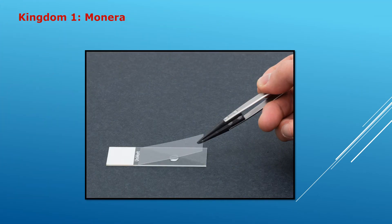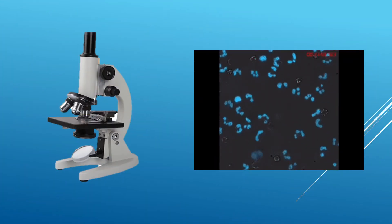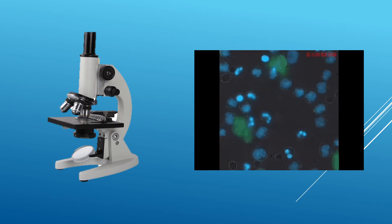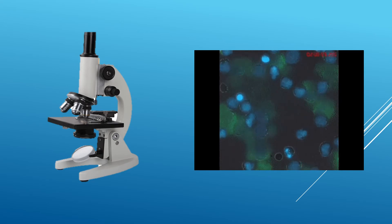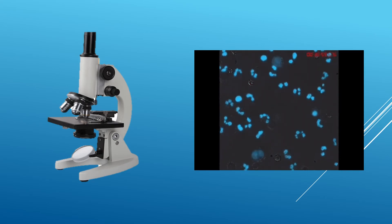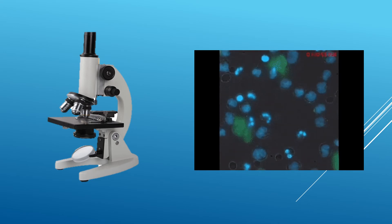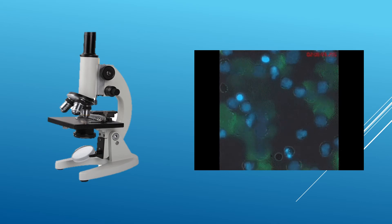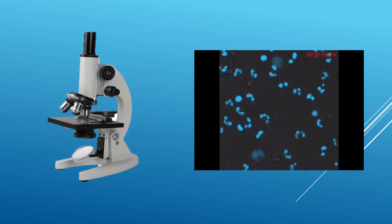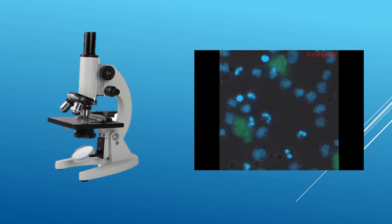For kingdom Monera, we can prepare a slide: take a small drop of curd or buttermilk on a clean glass slide, put a small drop of water on it, and carefully place a cover slip. Observe this slide under a compound microscope and you will see small rod-like microbes — lactobacilli bacteria. All types of bacteria and blue-green algae are included in kingdom Monera.